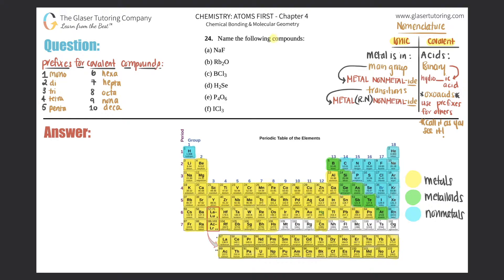Number 24: name the following compounds, a through f. We did a very similar question in number 23, so if you want more practice after this you can go back. We're going to go over all the rules for naming these compounds. The first thing you have to pay attention to is whether it's an ionic compound or a covalent compound, because ionic naming is very different from covalent naming.